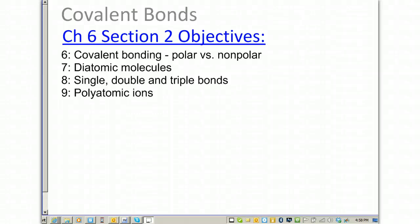Chapter 6, Section 2, Objectives. We're going to look in more depth at covalent bonding, specifically the difference between polar and non-polar. We're going to look at diatomic molecules, single, double, and triple bonds, and identify polyatomic ions.